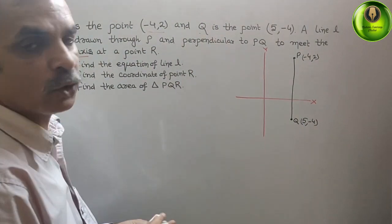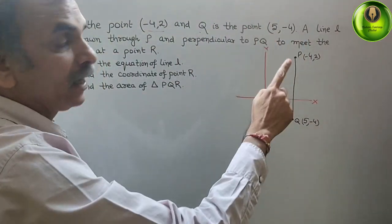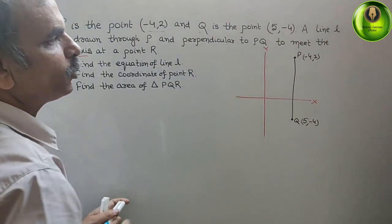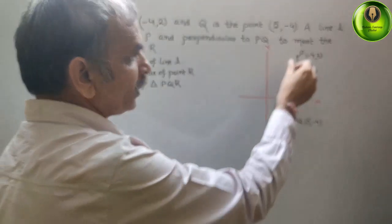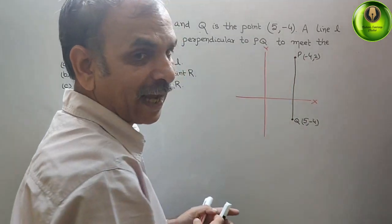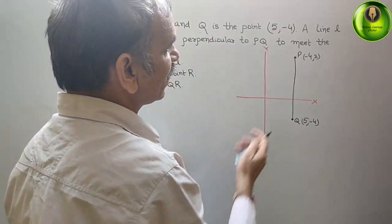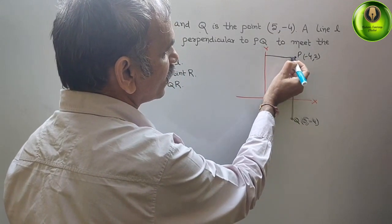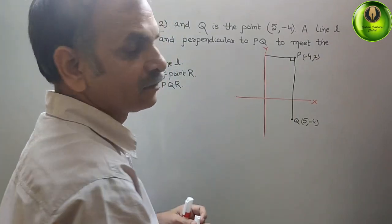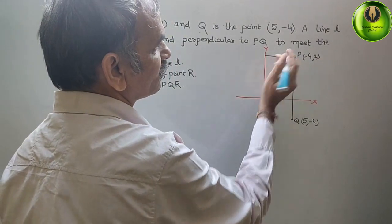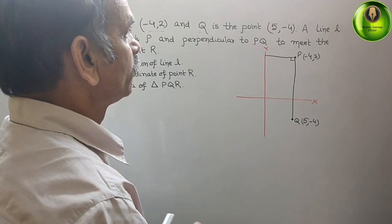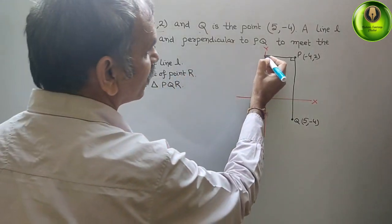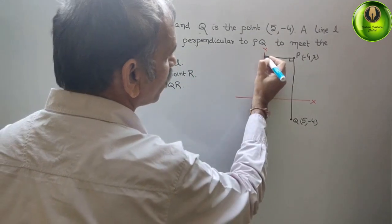Next, what they have told: a line L is drawn through P and perpendicular to PQ. Through P, perpendicular — that means that line is like this, forming 90 degrees here. So this is the line, to meet the y-axis at the point R.